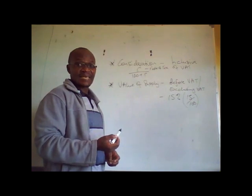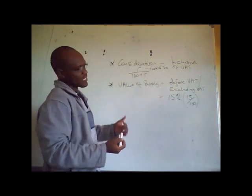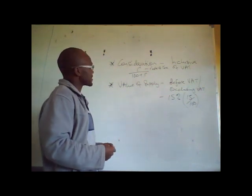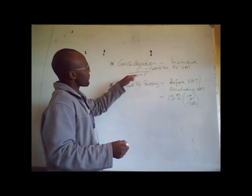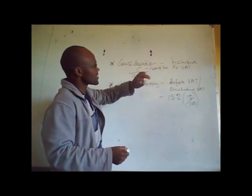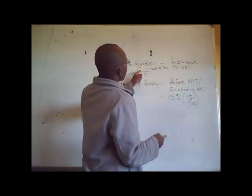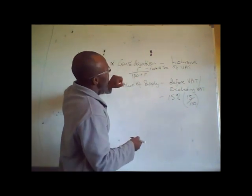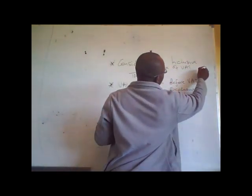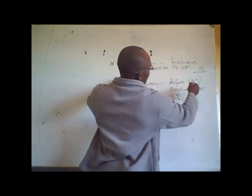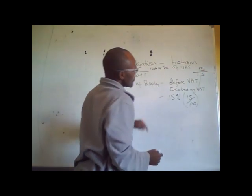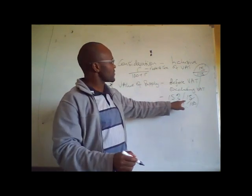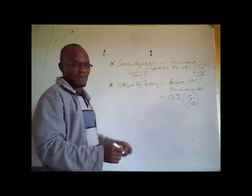When we are talking about 2019 tax legislation, we are talking about 15%, and in 2020 it is 14.5%. So applying the tax fraction: R is the standard rate, so you say 15 over 100 plus 15, which is 115. You use 15 over 115 when you are dealing with a consideration, and you use 15 over 100 when you are dealing with a value of supply.